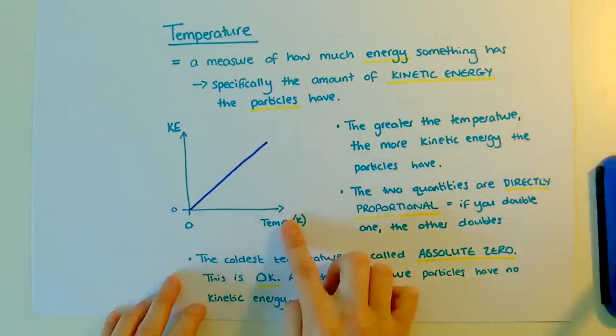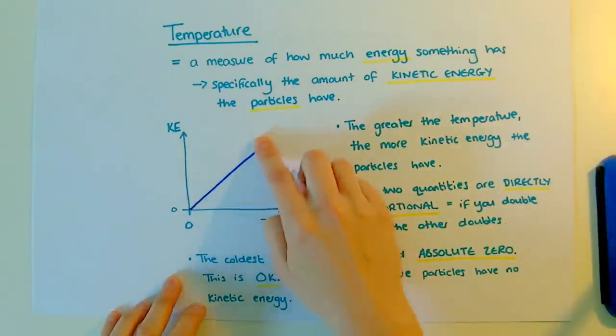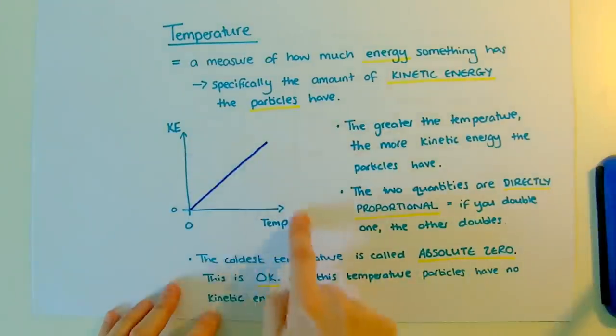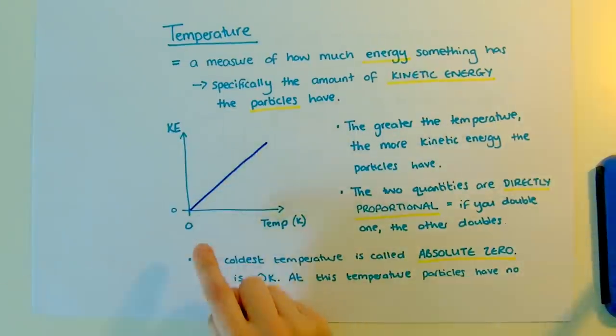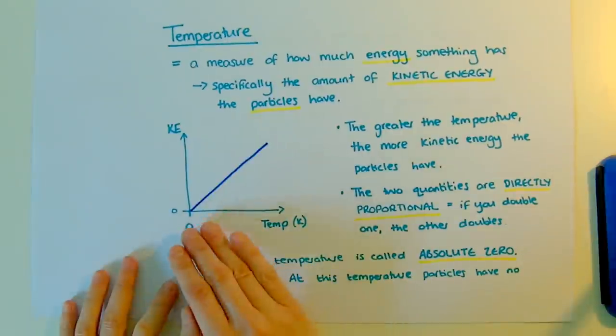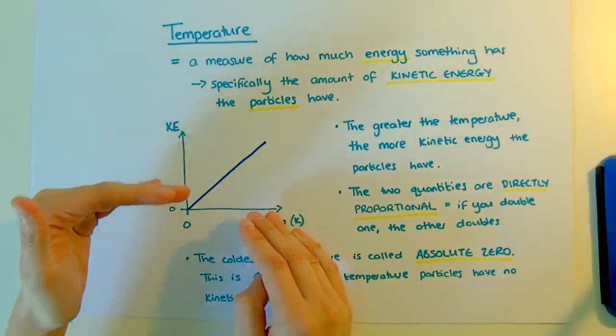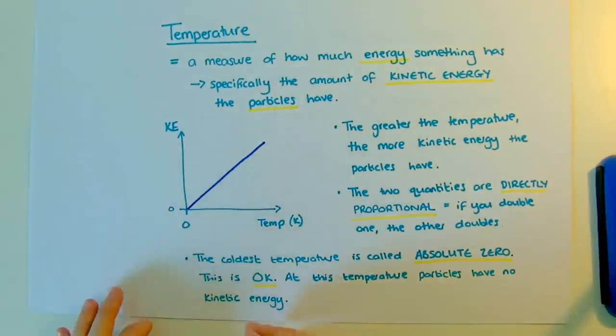As we increase the temperature, the particles get more kinetic energy. This is actually a directly proportional relationship—it's a straight line graph passing through the origin. Directly proportional also means that as you double one thing you double the other, or as you halve one thing you halve the other.